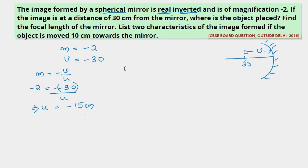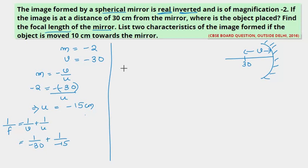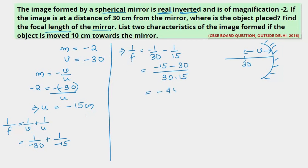Using this, we'll find the focal length of the mirror using the mirror formula: 1/f = 1/v + 1/u = 1/(minus 30) + 1/(minus 15) = minus 1/30 minus 1/15 = minus 45 over (30 × 15) = minus 1/10. So f = minus 10 cm.